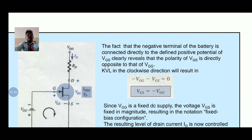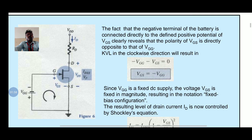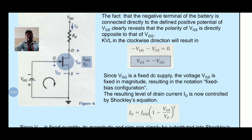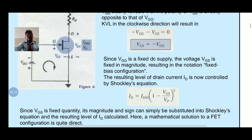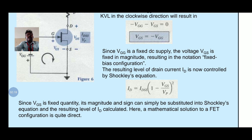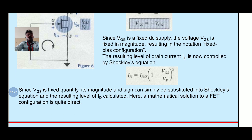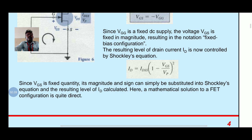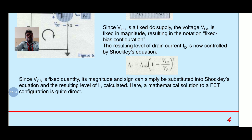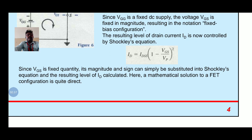The fact that the negative terminal of the battery is connected directly to the defined positive potential of VGS reveals that the polarity of VGS is directly opposite to that of VGG. By applying Kirchhoff's voltage law in the clockwise direction: minus VGG minus VGS equal to 0, so VGS equal to minus VGG. Since VGG is a fixed DC supply, the voltage VGS is fixed in magnitude, resulting in the notation fixed bias configuration. The drain current ID is now controlled by Shockley's equation: ID equal to IDSS into 1 minus VGS divided by VP, the whole square.